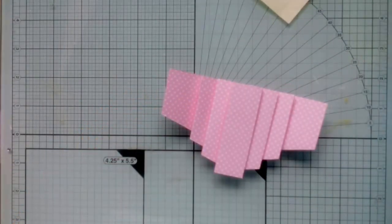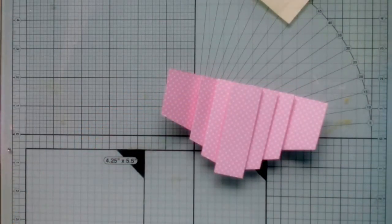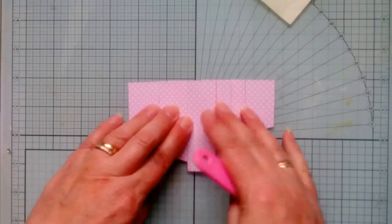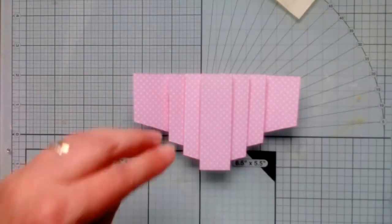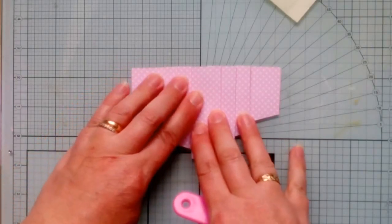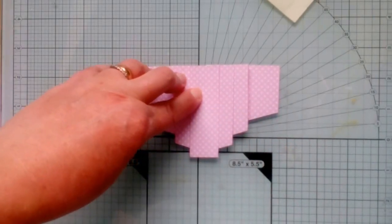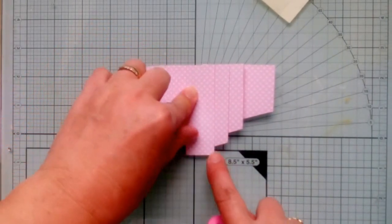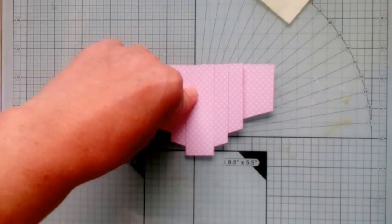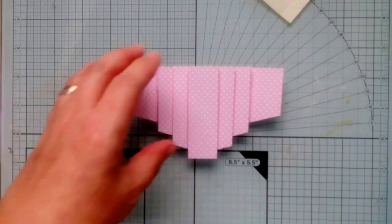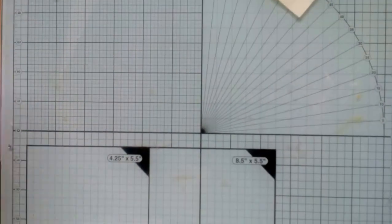Now you could use a single sided decorative paper that you've got and just have it this way round with the reverse of the pleats upwards. It looks equally as pretty, but as you can see this way round, you can't see the reverse of the card.